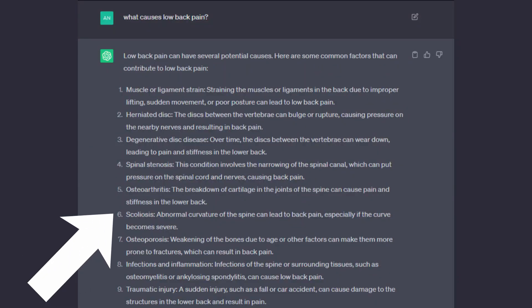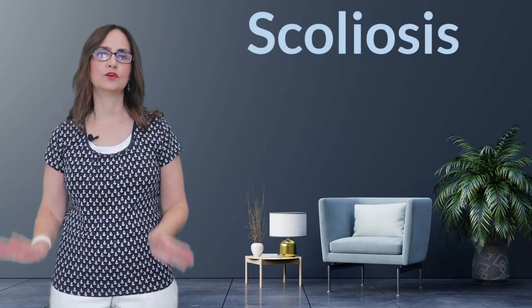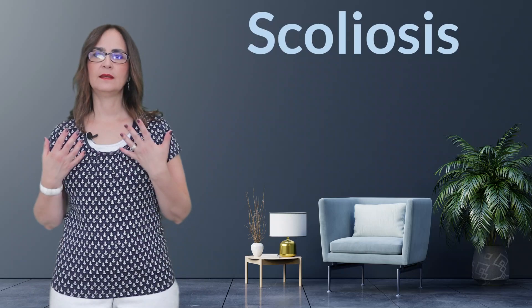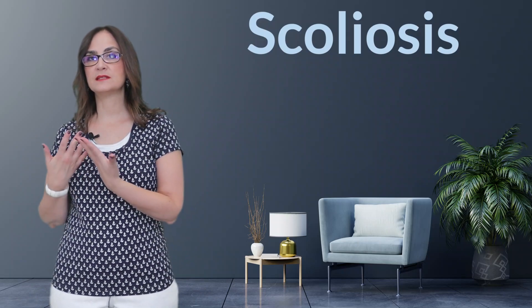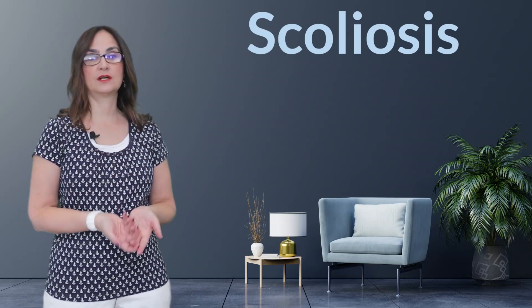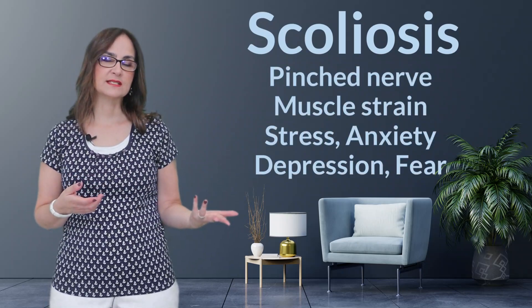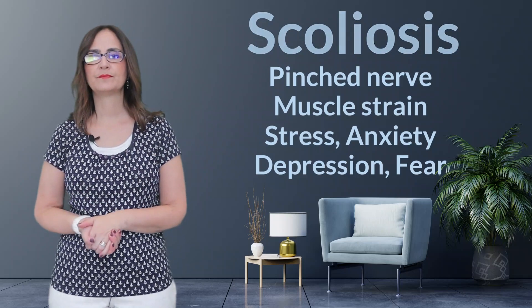Number 6: scoliosis. Abnormal curvature of the spine can lead to back pain, especially if the curve becomes severe. No — scoliosis is rarely a cause of low back pain. Scoliosis is a chronic problem and most people do not have back pain. When back pain happens in scoliosis, you have to find another cause: is it a nerve pinch, a muscle strain, stress, anxiety, depression, or fears?